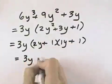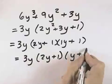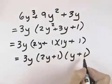So that we have 3y times 2y plus 1 times y plus 1. We don't need the 1 that's in front of the y, because that's assumed.